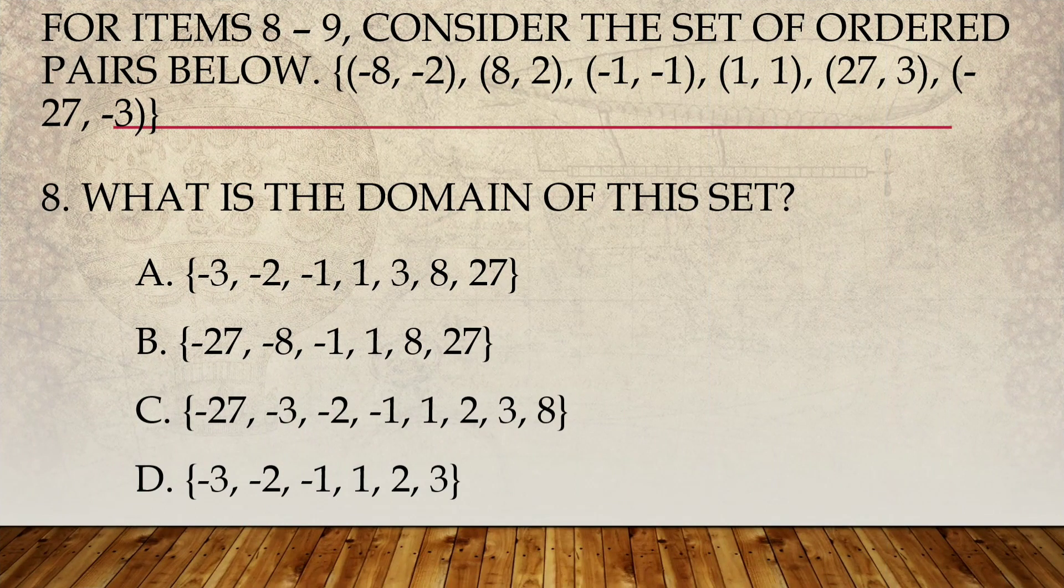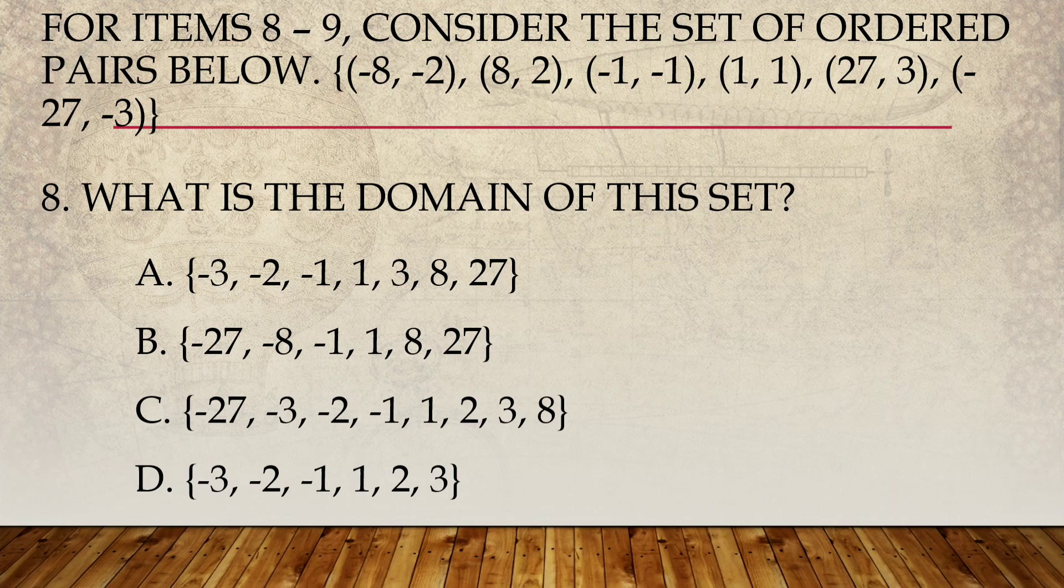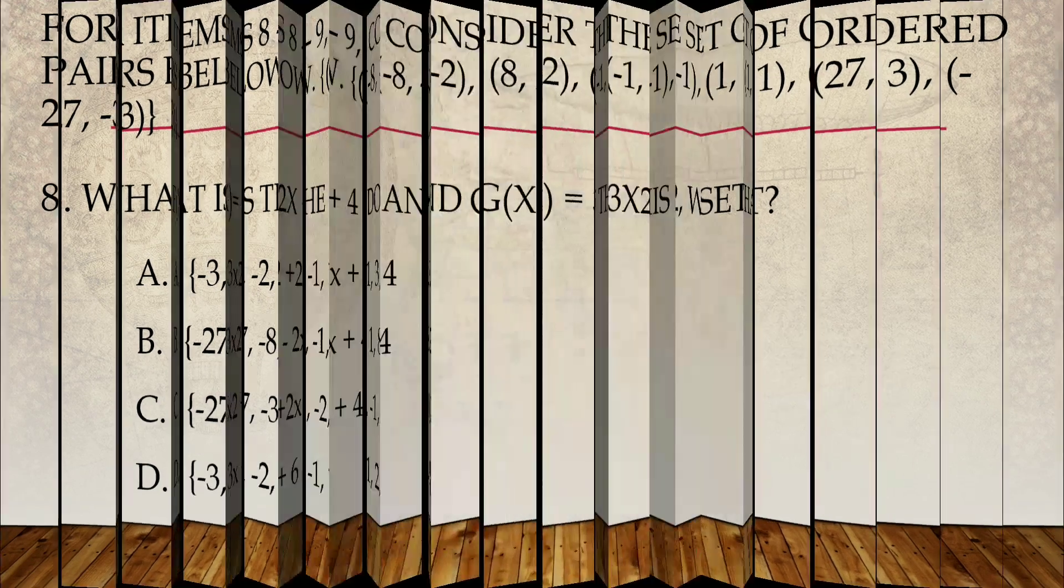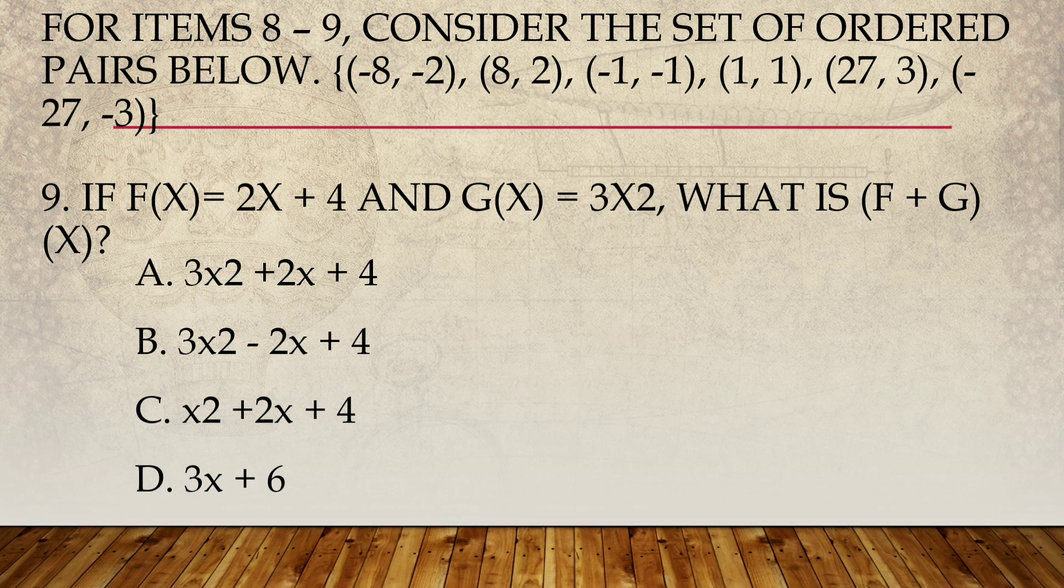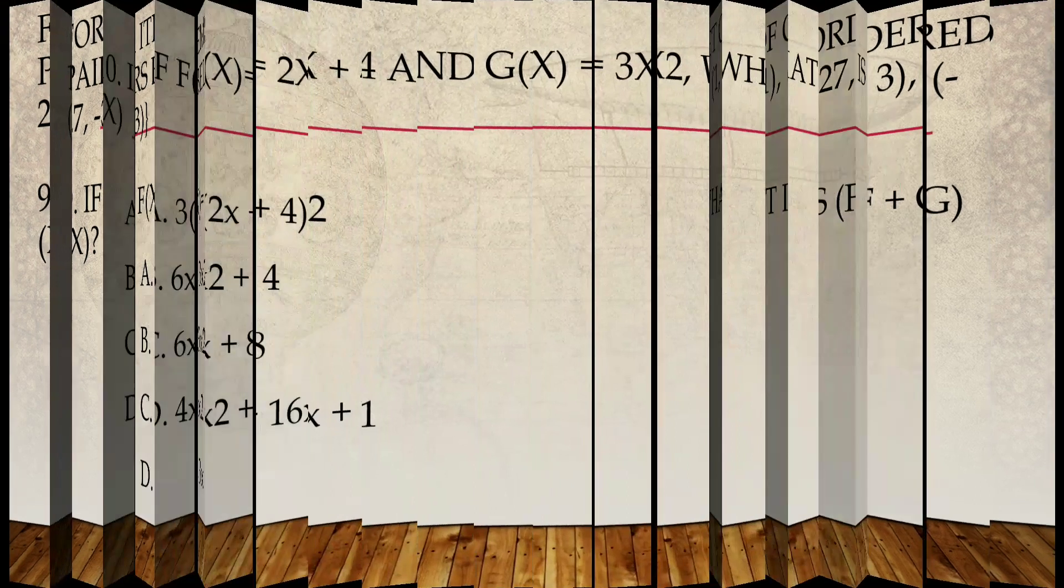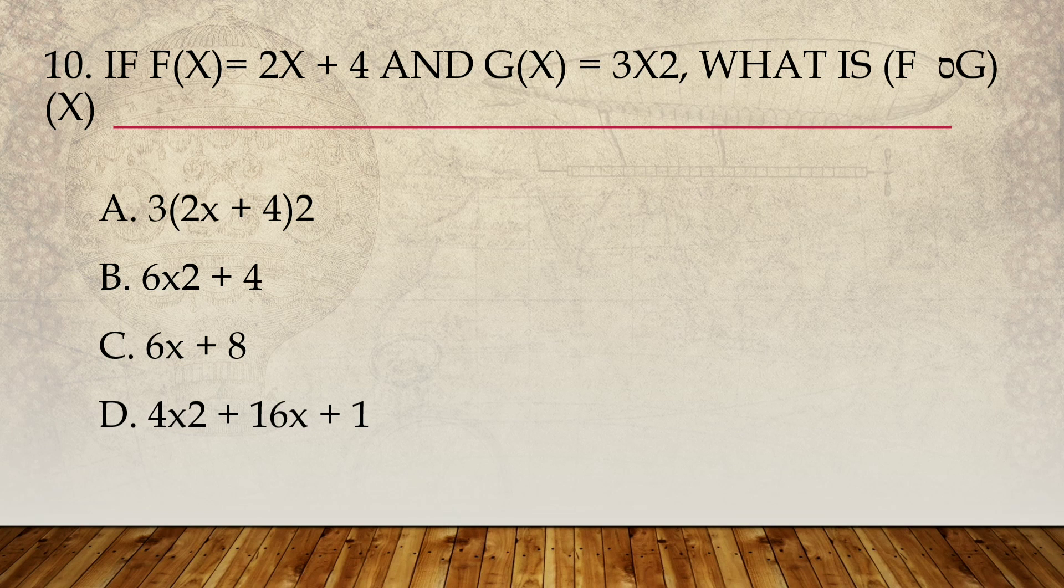And number eight, consider the set of ordered pairs below. So, what is the domain of this set? A, B, C, or D? And number nine, if f of x is equal to 2x plus 4 and g of x is equal to 3x squared, what is f of g of x? And lastly, if f of x is equal to 3x squared, what is f of g of x? Is it letter A, B, C, or D?